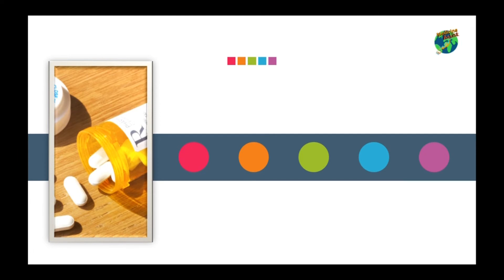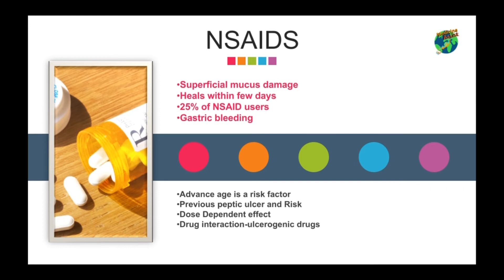The second etiological reason for peptic ulcer is non-steroidal anti-inflammatory drugs. NSAIDs cause superficial mucosal damage consisting of intramucosal hemorrhages within minutes of ingestion, progressing to erosion with continuous use. However, these lesions typically heal within a few days and rarely cause ulcer or acute upper GI bleeding. Gastroduodenal ulcer develops in only 25% of chronic NSAID users with continuous use. As many as 2 to 4% of patients with an NSAID ulcer will bleed or perforate. Advanced age is an independent risk factor, and the incidence of NSAID-induced ulcer increases linearly with age.